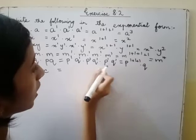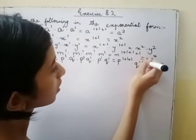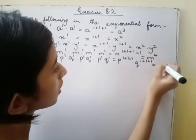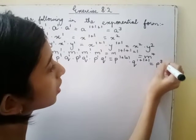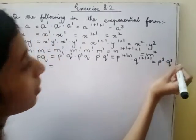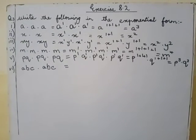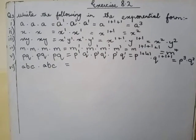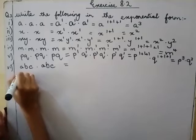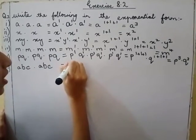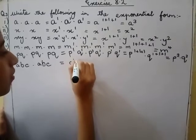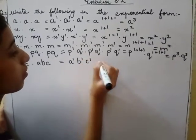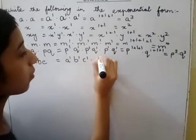So now the sixth part is a one b one c one, a one b one c one is equals to a one plus one, b one plus one, c one plus one.